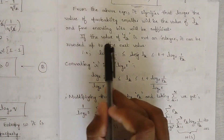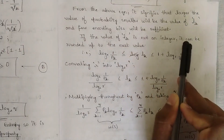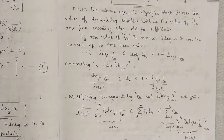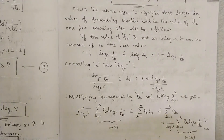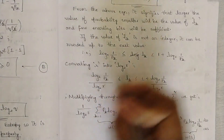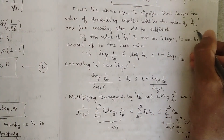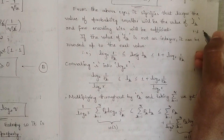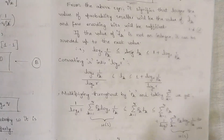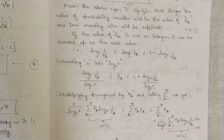If the value of L(K) is not an integer, it can be rounded up to the next value. The value of L(K) should always be an integer — it cannot be a decimal value. So if we get a decimal value, we should round it off to the next value. For example, while solving a problem, if you get a decimal value such as 1.2 or 1.3, the next value closer to this is 2, so you round it off to 2. L(K) cannot be a decimal number; it should be an integer.